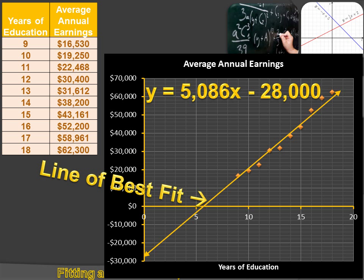And the slope of this line is 5086. Now, I figured that out by going over to this table and getting the change in my y values divided by the change in my x values. And that became my slope.